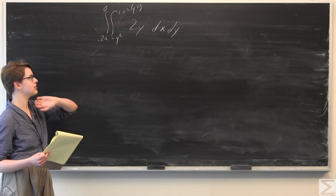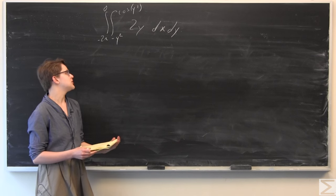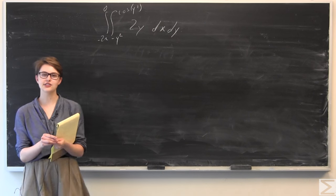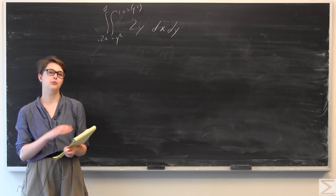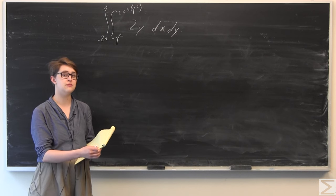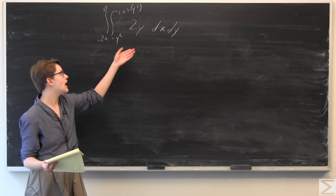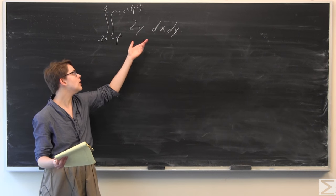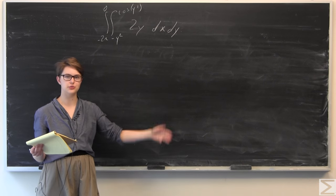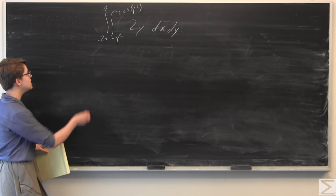We have this iterated integral of the function 2y dx dy. We're going to start plugging and chugging in here and see what substitutions or alterations we need to make as we go. Looking at 2y dx, there's no immediate issues, so we're going to go ahead and dive right into this.